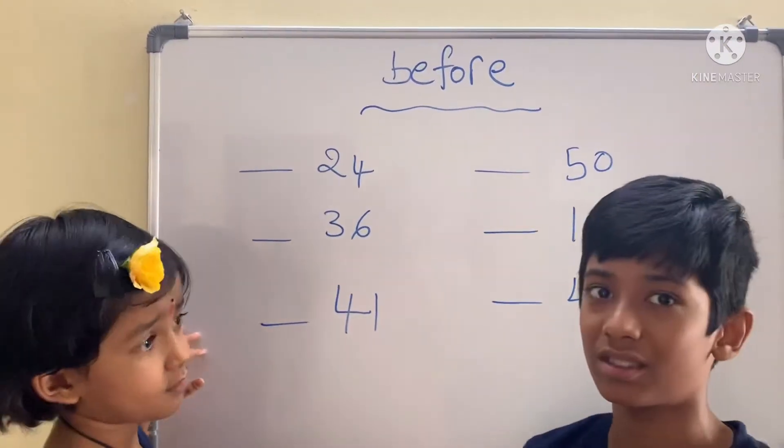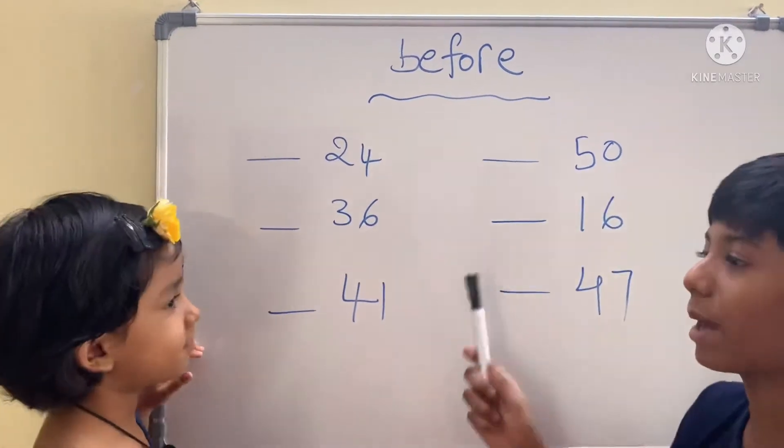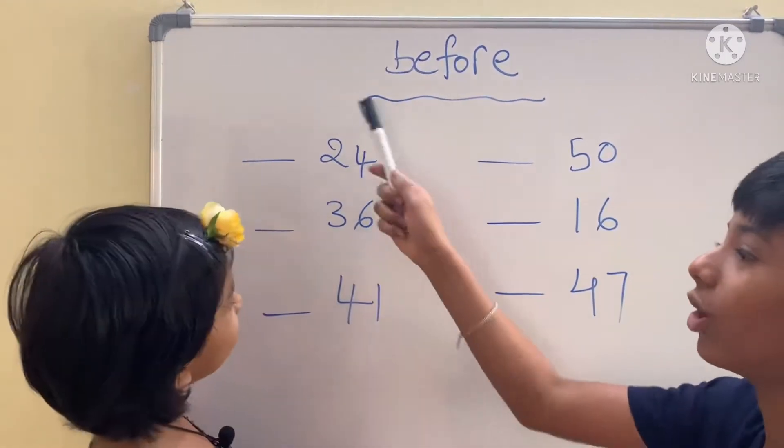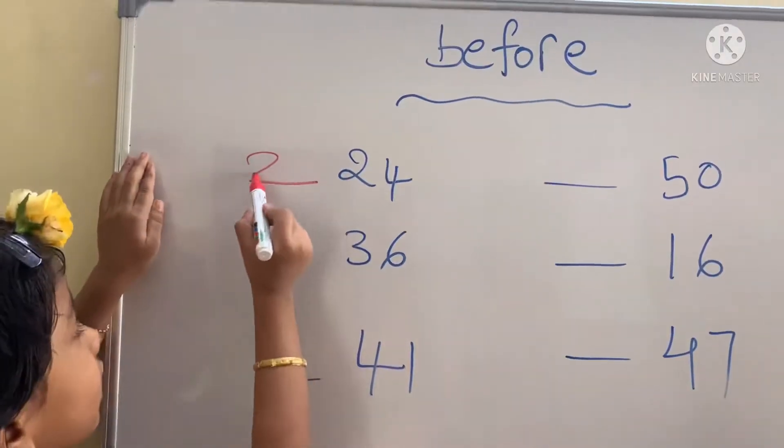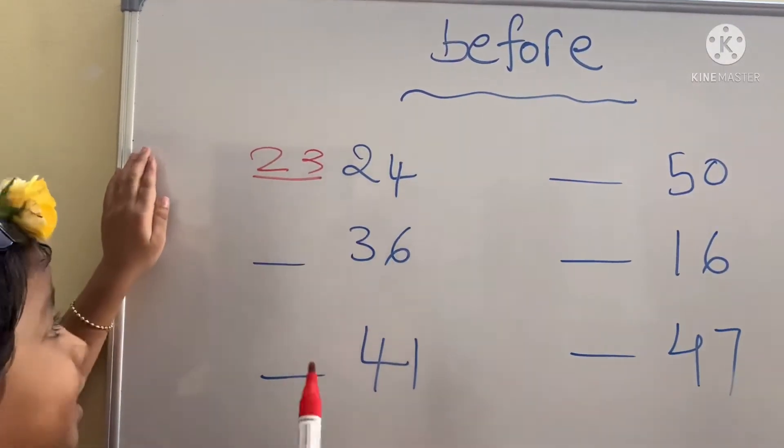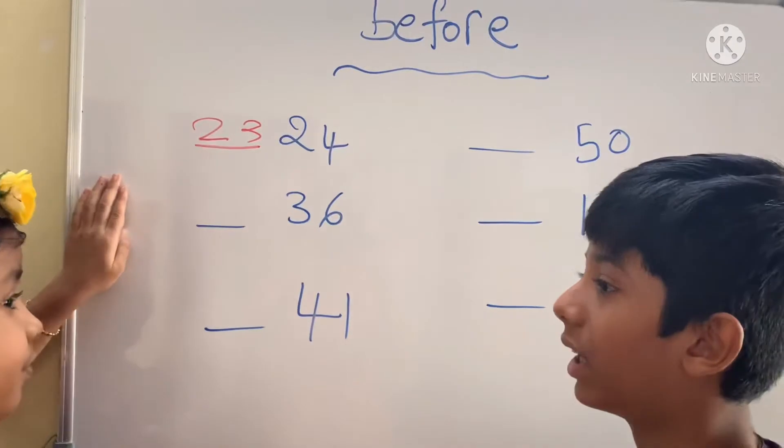Baby, what comes before 24? 23. Two tens, three ones, 23. Which number comes before 36?